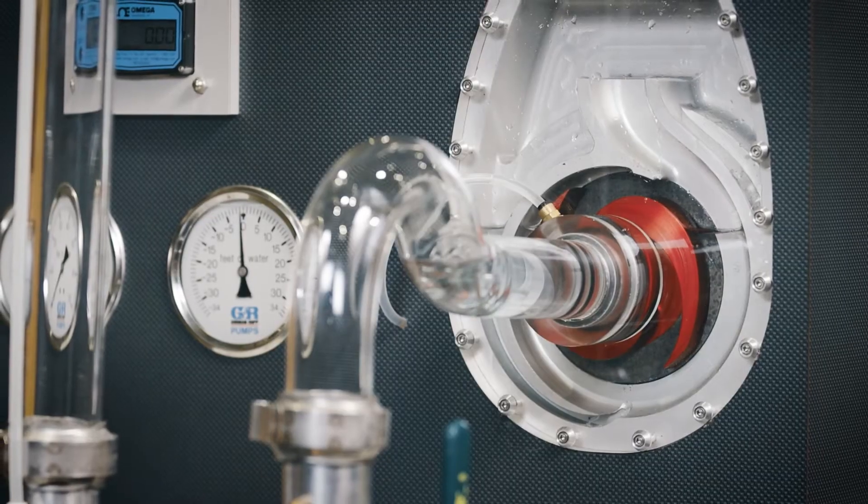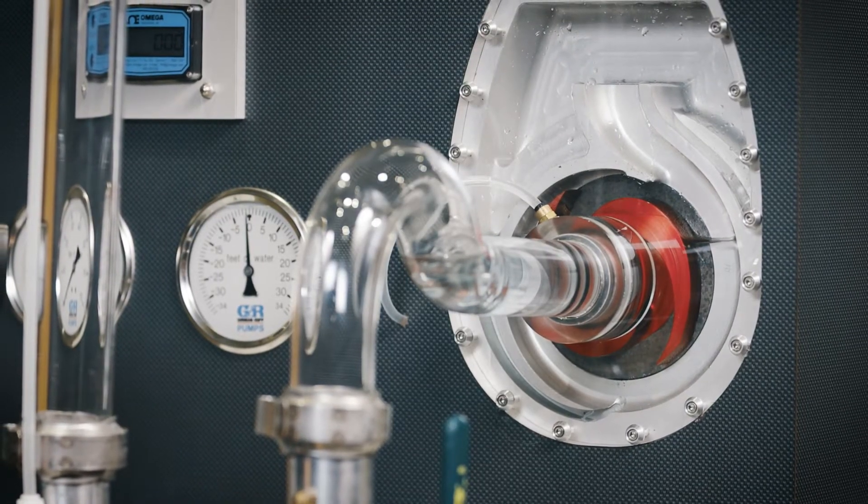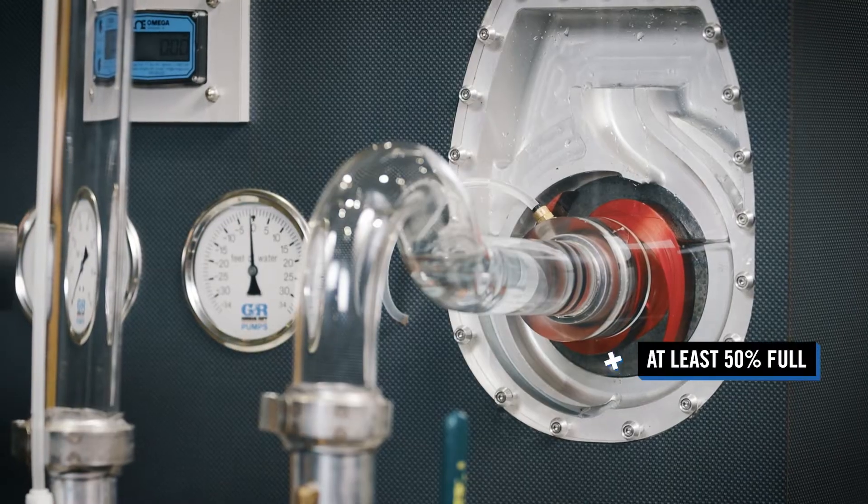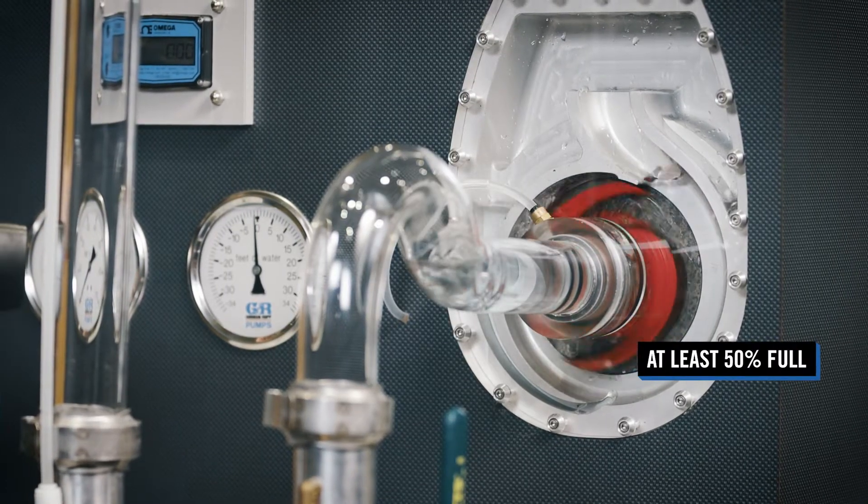Before initiating a reprime cycle, a self-priming centrifugal pump requires at least half of its casing to be filled with water.